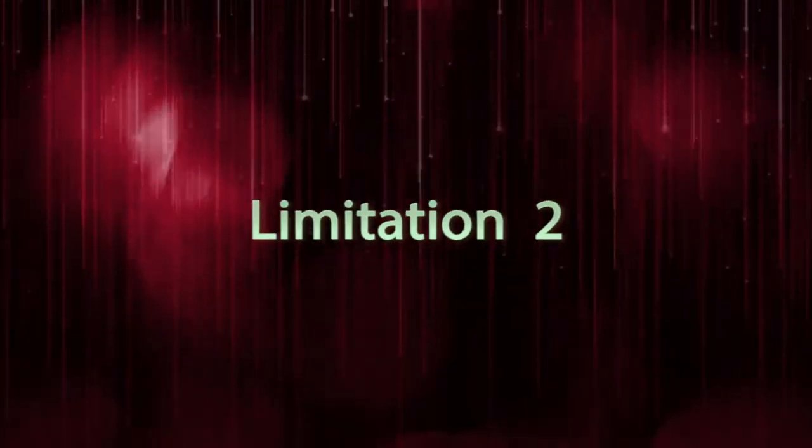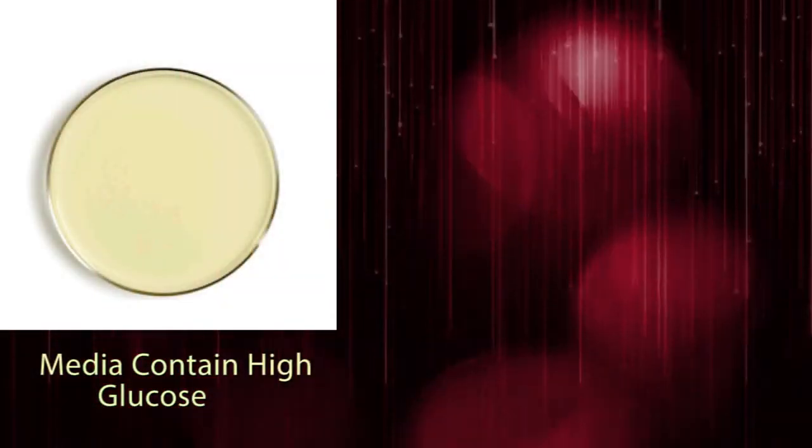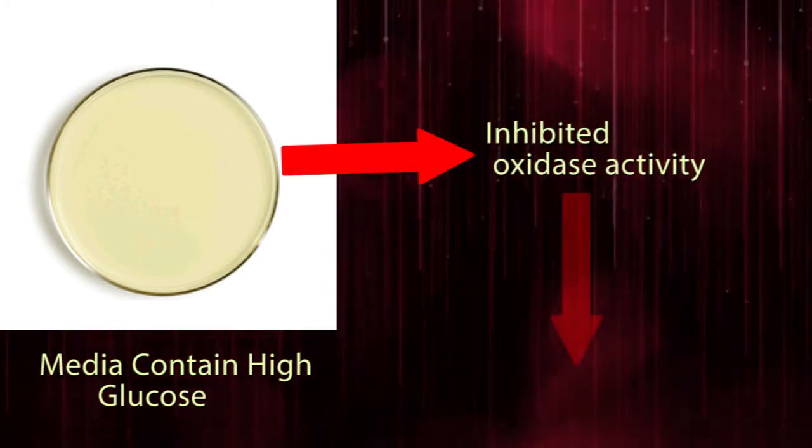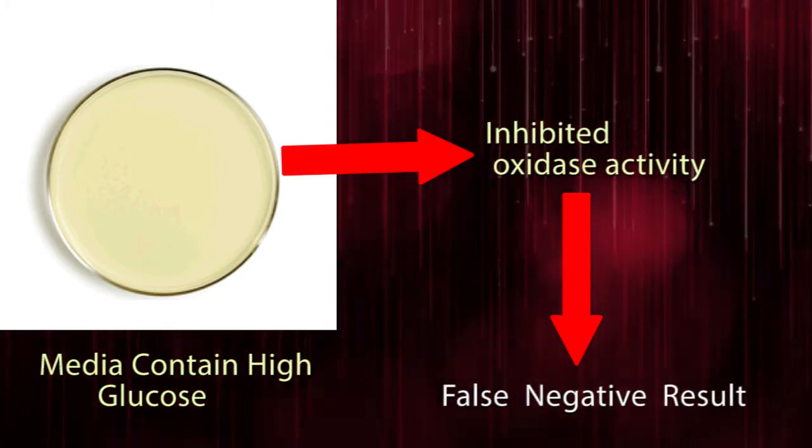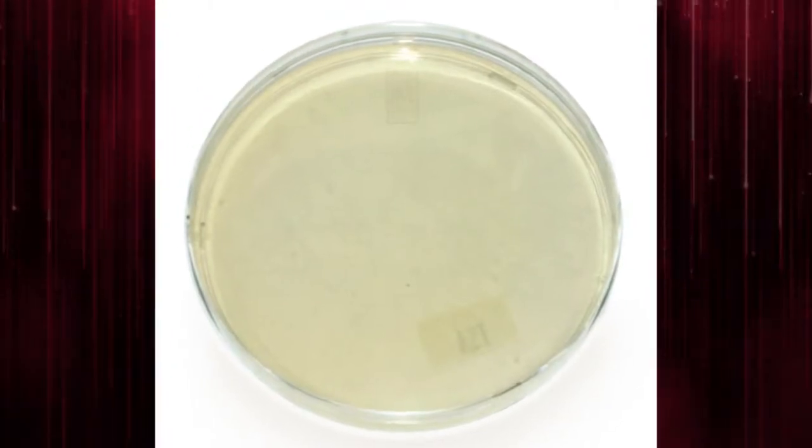Limitation Number 2: Both bacteria and yeast grown on media containing high concentrations of glucose show inhibited oxidase activity. So results can be false negative. It is recommended to test colonies grown on media without excess sugar. Tryptic soy agar is also an excellent media.